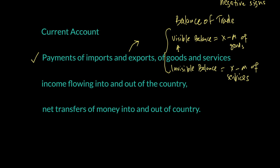The second component of the current account is income flowing into and out of the country — all income coming from investments, such as rents, interest, dividends, and wages. For example, if I own an apartment in the UK and receive rent in Pakistan, that is money flowing into the country. But if a UK resident owns an apartment in Pakistan and receives rental income, that flows out of the country.